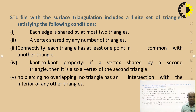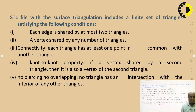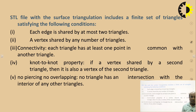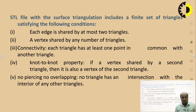An STL file with surface triangulation includes a finite set of triangles satisfying the following conditions: Each edge is shared by at most two triangles. A vertex is shared by any number of triangles. Connectivity — each triangle has at least one point in common with another triangle. Vertex-to-vertex property — if a vertex is shared by a second triangle, then it is also a vertex of that second triangle. No piercing, no overlapping — no triangle must intersect with the interior of any other triangle. These five conditions must be satisfied to form a valid STL tessellation.